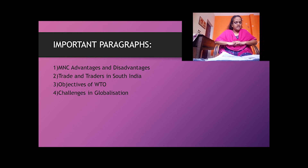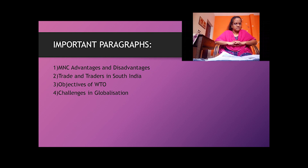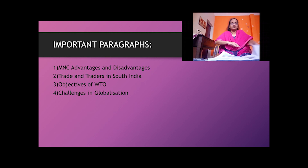The Danes formed an East India Company and arrived in India in 1616. In 1845, they were forced to sell all their Indian settlements. Then the French: the first French factory in India was established in 1668 by obtaining permission from the Sultan of Golconda. Pondicherry was the headquarters of the French. The government of India has set up Special Economic Zones in southern states, especially in Tamil Nadu, Andhra, Karnataka, and Kerala, to boost exports.